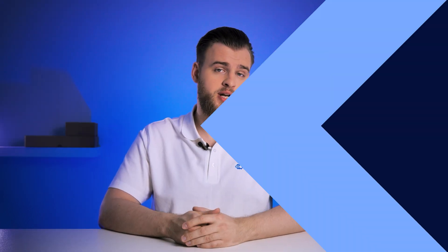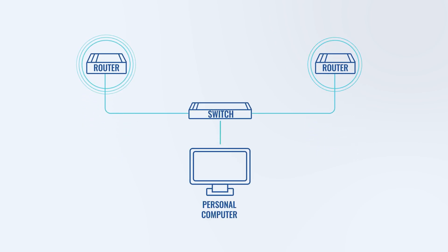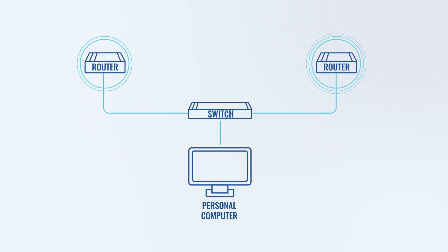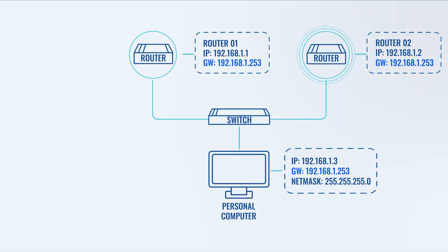To successfully implement VRRP functionality, you'll need two VRRP-capable routers. Optionally, you can also use a switch to simplify network management by connecting all devices.